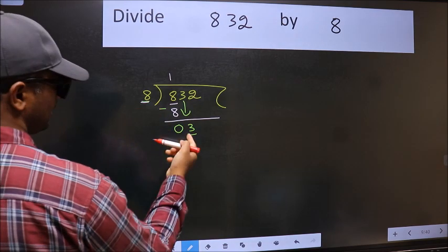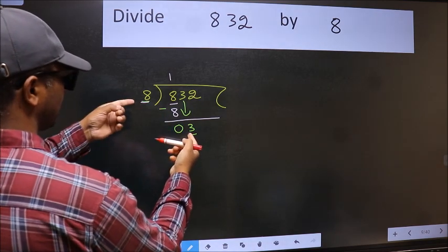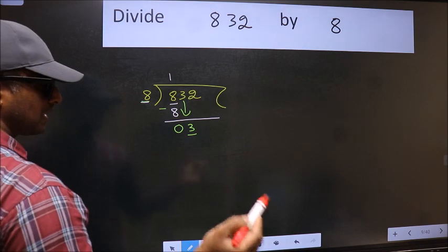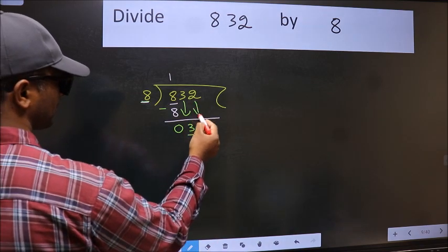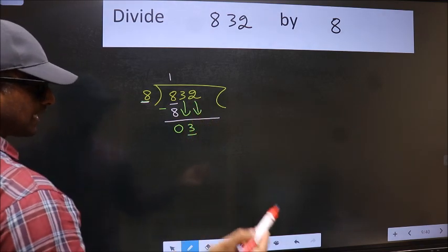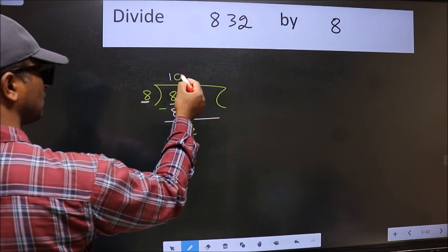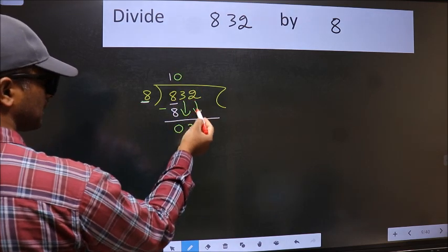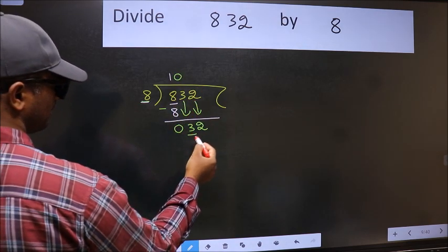And here 8. 3 is smaller than 8, so we should bring down the second number. And the rule to bring down the second number is we should put 0 here. Then only we can bring this number down.